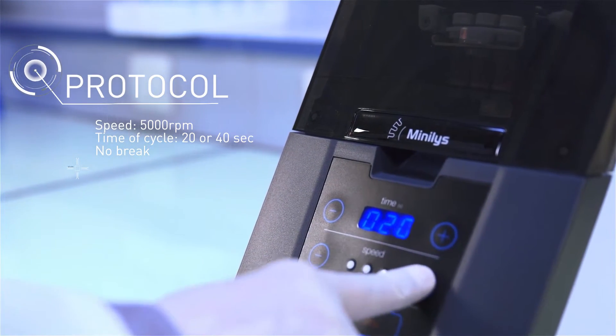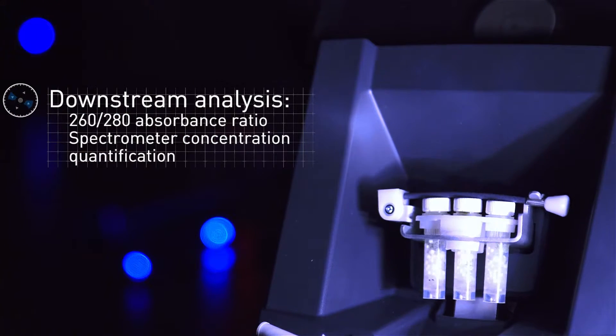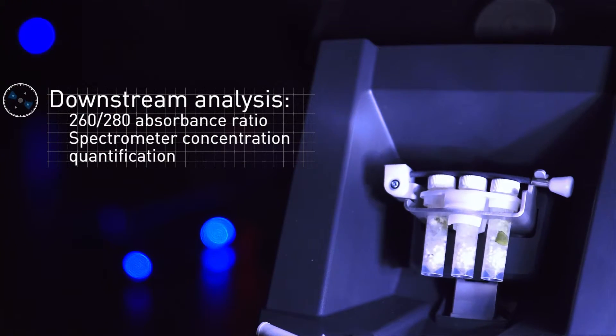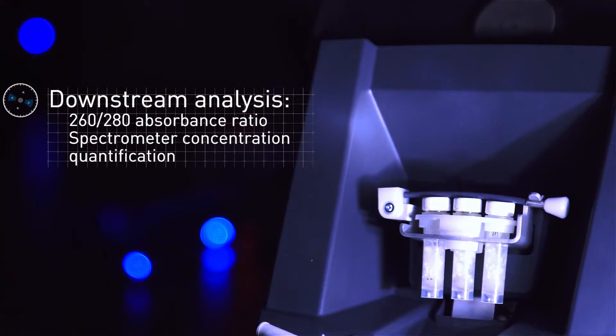After homogenization, RNA quality is evaluated by the 260/280 absorbance ratio and the concentration of RNA is measured.